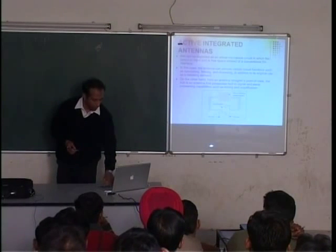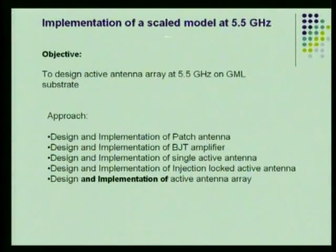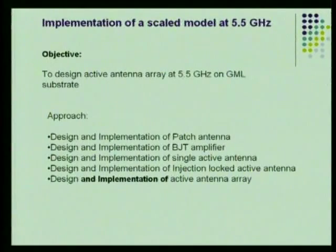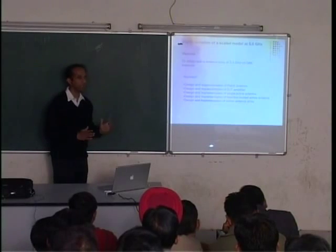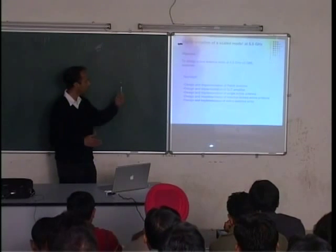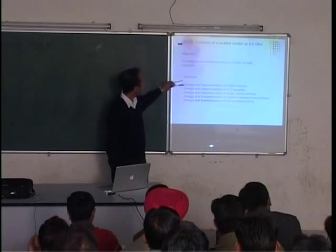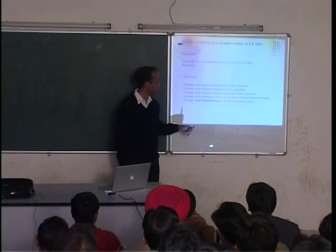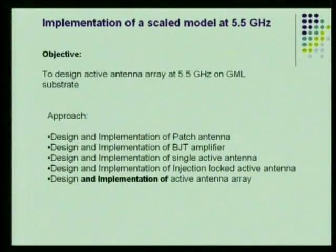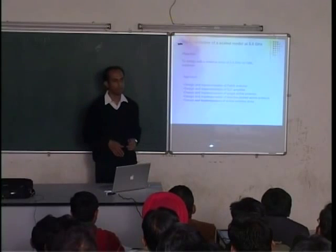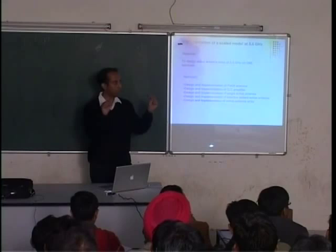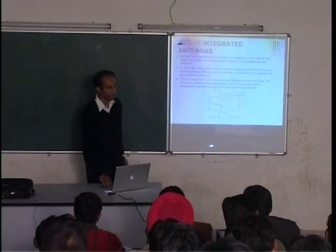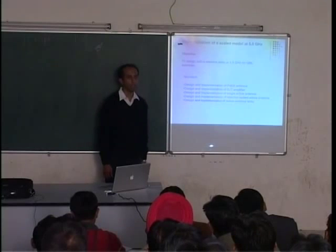Let us see a little more of this particular active antenna. The particular frequency chosen was 5.5 gigahertz — there is nothing very special about that; C band is a standard microwave band, 4 to 6 gigahertz. There will be some terms here which you may not understand, and those are not important. This is the design and implementation of a patch antenna. Obviously this is not a standard antenna, and there are no standard formulas for this. Nowadays there are electromagnetic simulators — have you heard of electromagnetic simulation software?